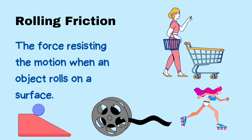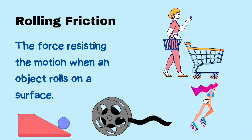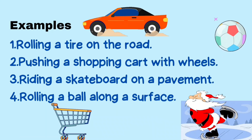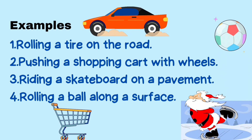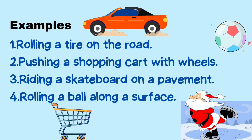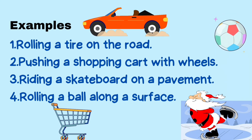Rolling friction is the force resisting the motion when an object rolls on a surface. Examples: 1. Rolling a tire on the road. 2. Pushing a shopping cart with wheels. 3. Riding a skateboard on a pavement. 4. Rolling a ball along a surface.